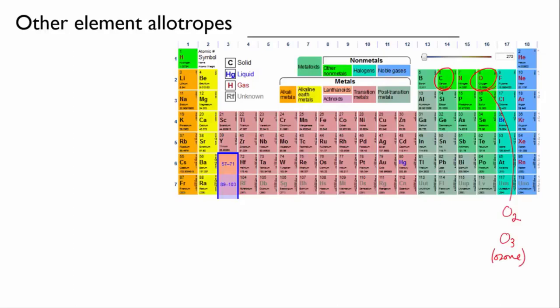Sulfur is in the same group as oxygen, and it's able to form diatomic molecules like oxygen, S2, but its preferred form is actually in rings of eight sulfur atoms.